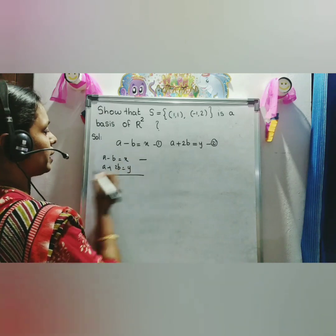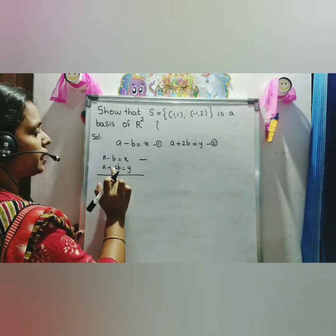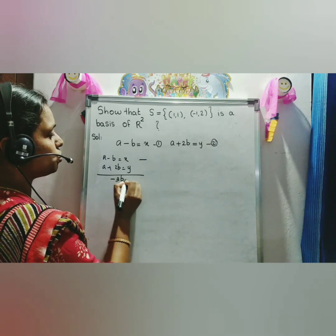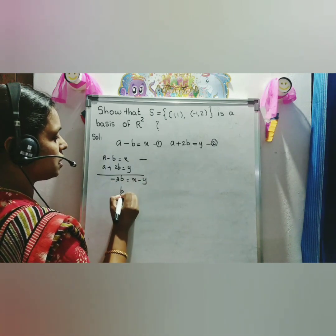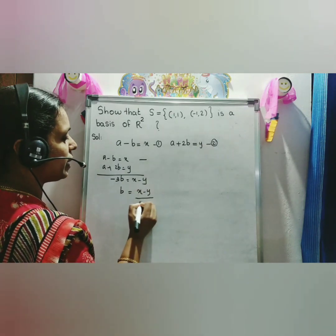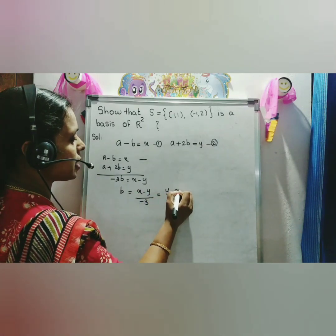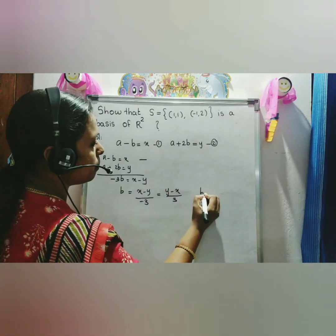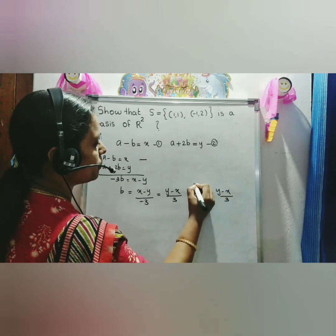Subtracting equation 1 from equation 2: (A - A) + (-B - 2B) = x - y, giving -3B = x - y. Then B = (x - y) / (-3), which equals (y - x) / 3.